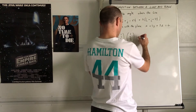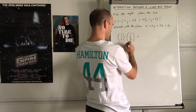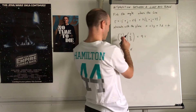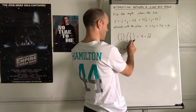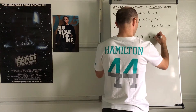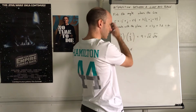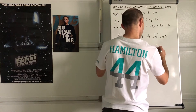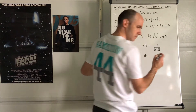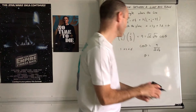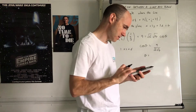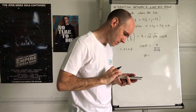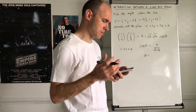Let's compute the scalar product: (1)(1) + (1)(2) + (2)(3) = 1 + 2 + 6 = 9. The magnitude of (1,1,2) is √6, and the magnitude of (1,2,3) is √14. So cos θ = 9 / (√6 · √14) = 9/√84 = 3√21/14. Taking inverse cosine gives approximately 10.89°.